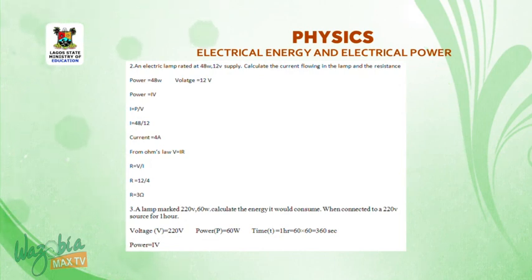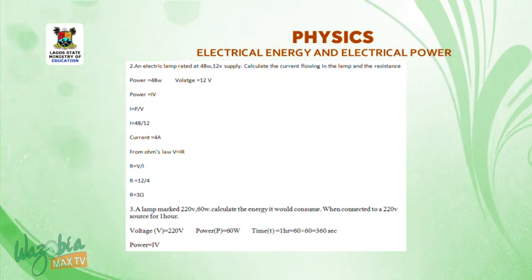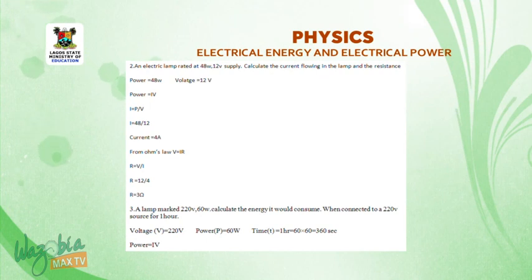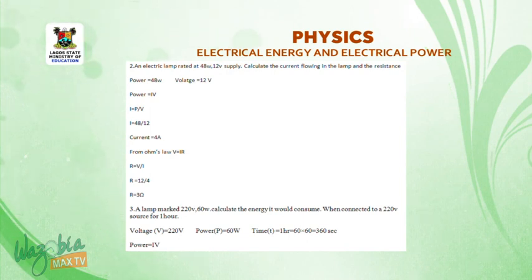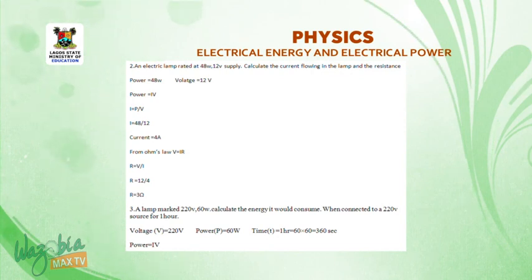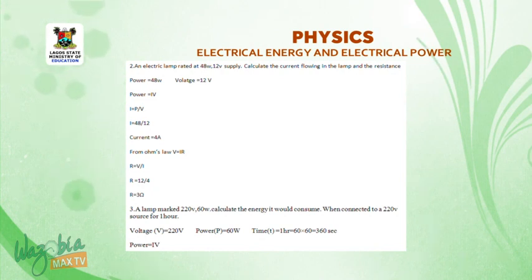Example 2: An electrical lamp rated at 48 watts, 12 volts. Calculate the current flowing and the resistance. Given: power = 48 W, voltage = 12 V. Using P = IV, current I = P/V = 48/12 = 4 amperes. From Ohm's law, V = IR, so resistance R = V/I = 12/4 = 3 ohms.